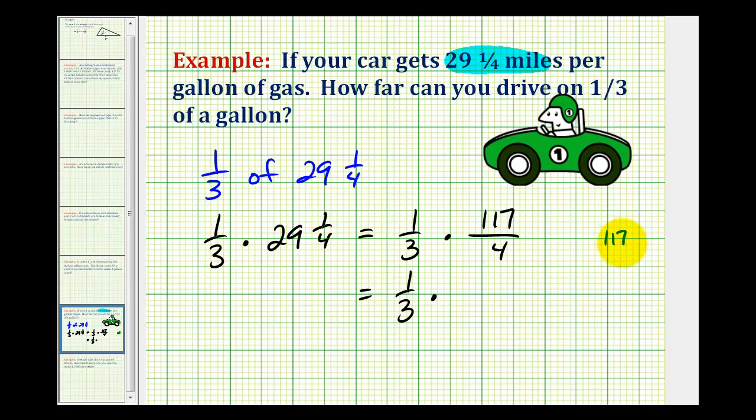So 117 divided by three is equal to 39, which means we can rewrite 117 as three times 39. Notice how the three simplify out, and then when we multiply,